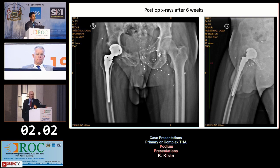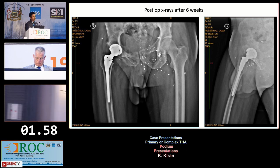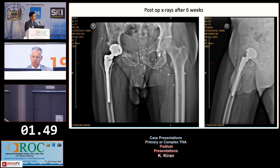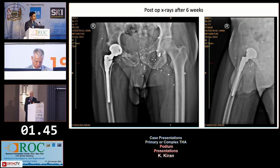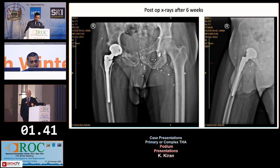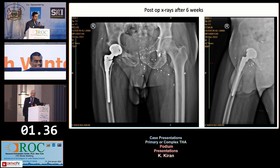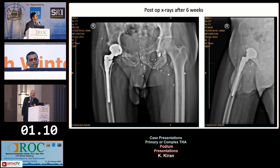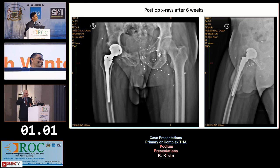Before surgery, how many panelists do a traction X-ray to assess how much the hip is coming down? Has anyone done it? I haven't. I can't see how it changes management — you may get some information, but practically it doesn't change what you prepare for. You could get an idea whether you can reduce the hip or need a sub-trochanteric osteotomy, but you're going to prepare with instrumentation for a shortening osteotomy anyway. My fellow and I will give traction and just see — it helps confirm the plan.